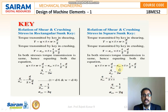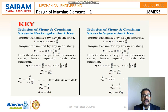Now we find the relationship between shear and crushing stress for the rectangular sunk key. The torque transmitted by the key in shearing is T = τ × l × w × (d/2), and the torque transmitted in crushing is T = σ_cr × l × (d/2) × (d/2). Since both torque transmissions are the same, we can equate: τ × l × w × (d/2) = σ_cr × l × (d/2) × (d/2).